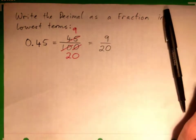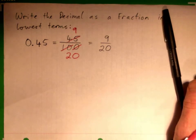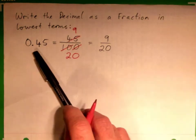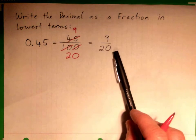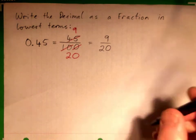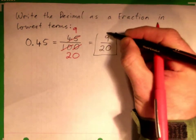Can we cross-cancel any further than that? No. So 45 cents is 9 20ths. And you're done. That's the answer.